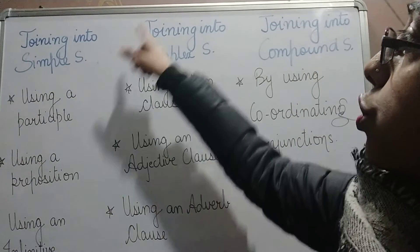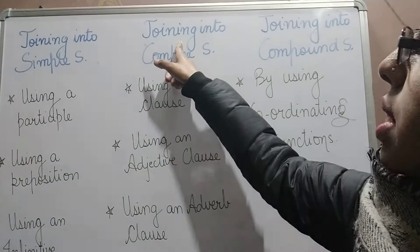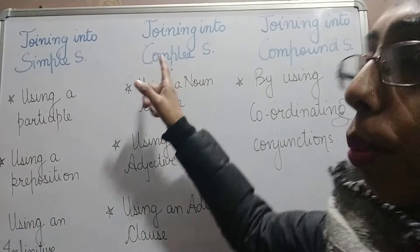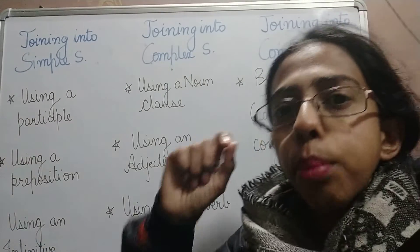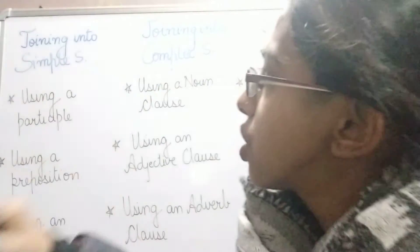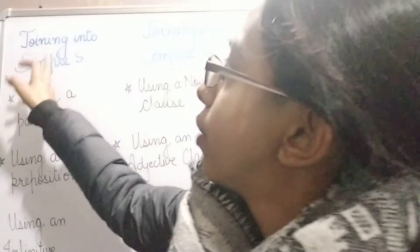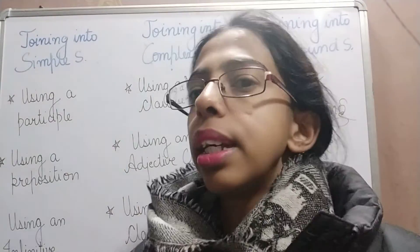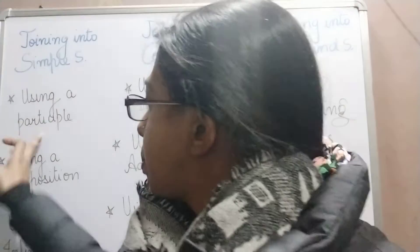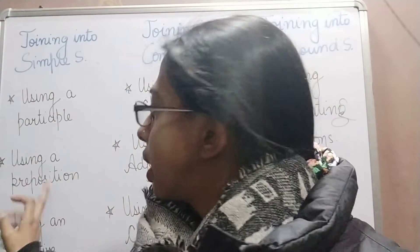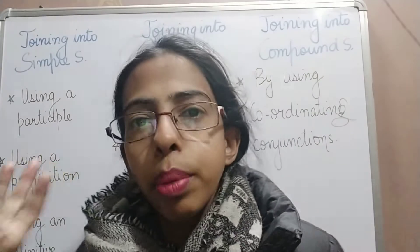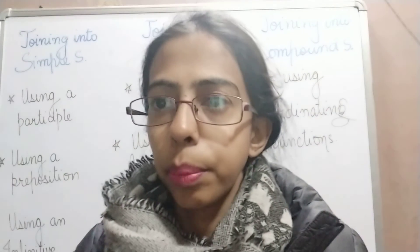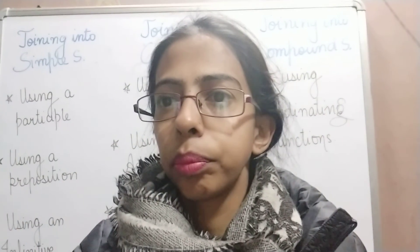To recap: when joining two simple sentences into a compound sentence, use a coordinating conjunction. When joining into a complex sentence, use a subordinating conjunction. When joining two sentences to frame one simple sentence, use a participle, an infinitive, or a preposition.